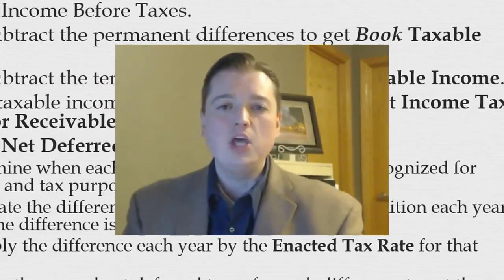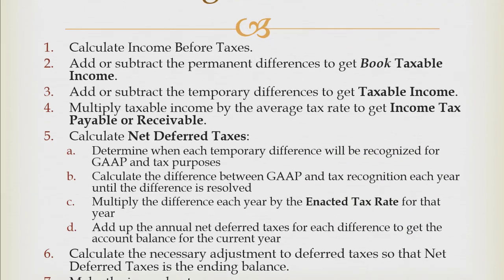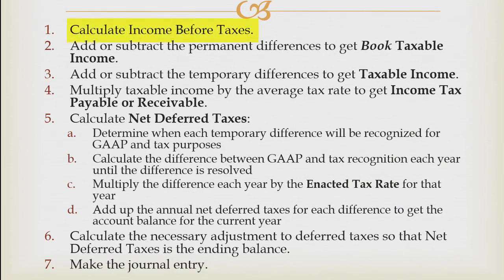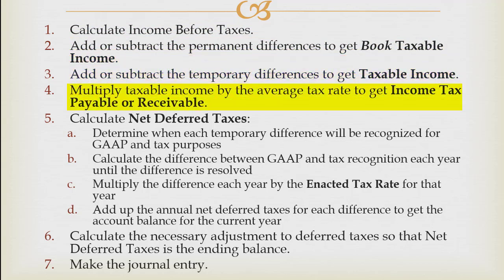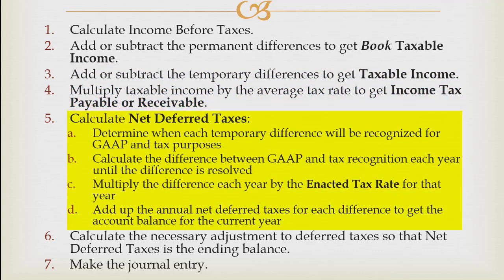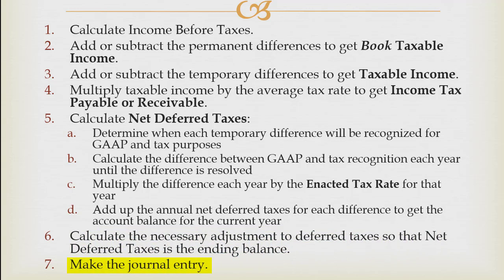That's where we're going to pick up now — actually using these steps to do an example. As a brief refresher, here are our seven steps to calculating deferred taxes. We start with income before taxes, get rid of permanent differences, add or subtract temporary differences, which allows us to get income tax payable or receivable. Then we adjust for deferred taxes, figure out our adjustment in step six, and finally in step seven — the journal entry.